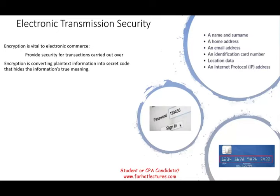What is encryption? Encryption is converting plain text into a secret code that hides the information's meaning. Here's a simple example just to illustrate the idea. Let's assume your credit card number is 1, 2, 3, 4, 5, 6, 7, 8, 9, 10, 11 — and so on.